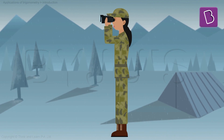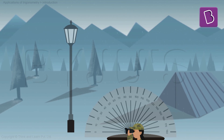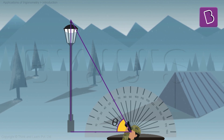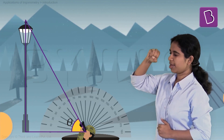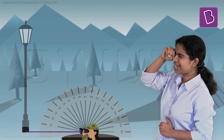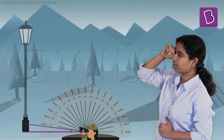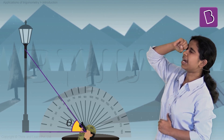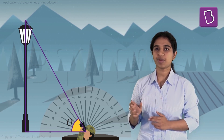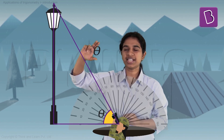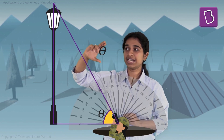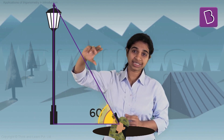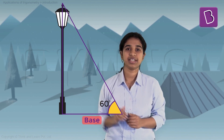Instead of the naked eye, imagine taking a binocular at my eye level, fixing it to a post that has a protractor attached. I keep it at zero degrees, looking straight ahead to see the base of the pole, then slowly move the binocular up until I finally see the top of the pole. I stop it there. Now I can easily measure the angle with respect to the ground using the protractor. Let's say the angle is 60 degrees.